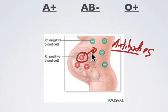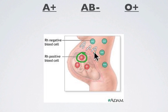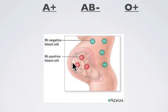Where it gets tricky is in the second birth. If mom is still negative but now has all these antibodies selecting against the positive factor, and the second baby is also positive, these antibodies are going to begin to attack the fetus. Those antibodies would attack the baby's blood and in essence kill the fetus. Since mom wants another happy and healthy baby, the doctor will give mom a shot — usually a series of three — to eradicate all the antibodies.